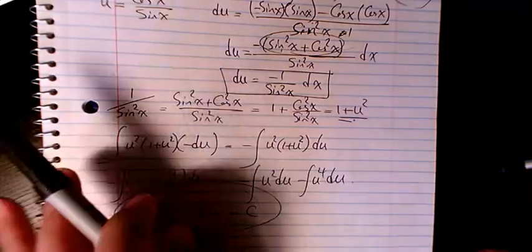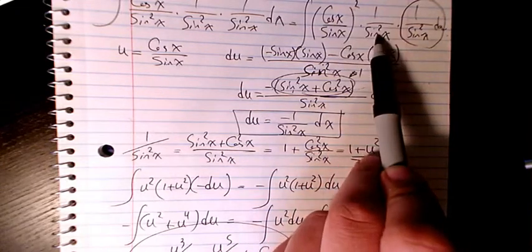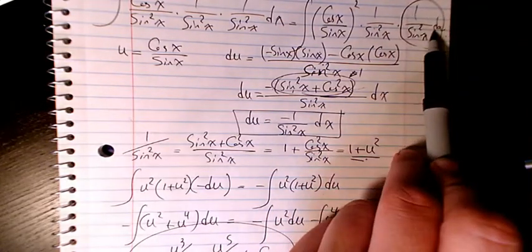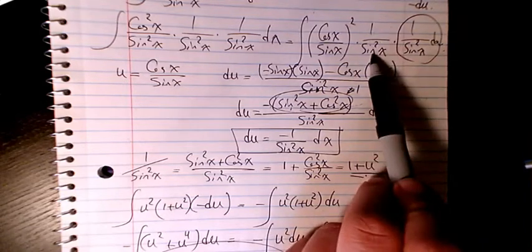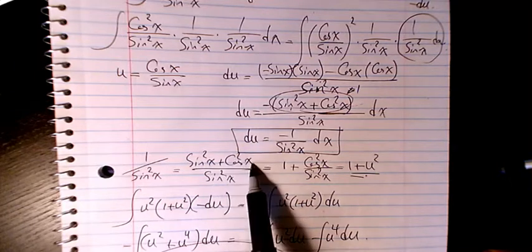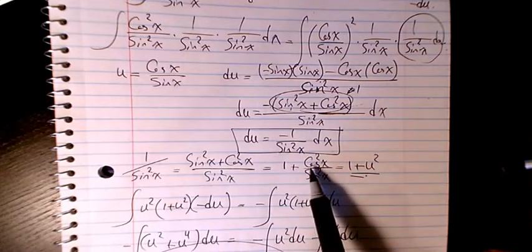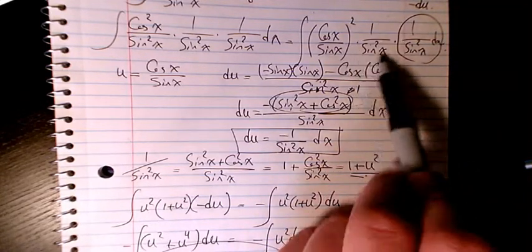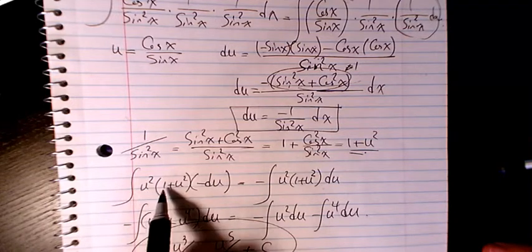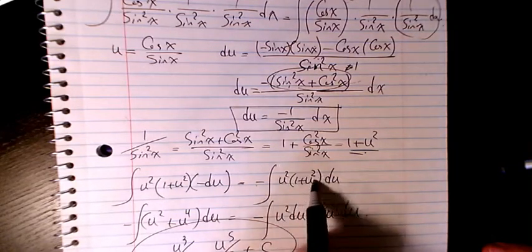Let's cover that again. We had cosine over sine squared, times one over sine squared, times one over sine squared x dx. This part is negative du. For one over sine squared, I wrote sine squared plus cosine squared divided by sine squared, which is one plus cosine squared divided by sine squared. Since cosine divided by sine is u, that becomes one plus u squared. Cosine over sine squared is u squared, so we have u squared times one plus u squared times negative du.